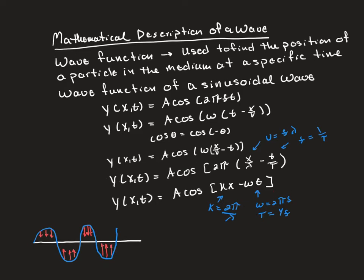We also have another form of the same wave function. We can define something called the wave number, which equals 2π divided by the wavelength, with units of radians per meter. Factoring in 2π gives us 2π over the wavelength — the wave number — out front, and 2π divided by the period. Since angular frequency equals 2π times frequency, we get our angular frequency back. These are the two forms of the wave function we'll discuss.